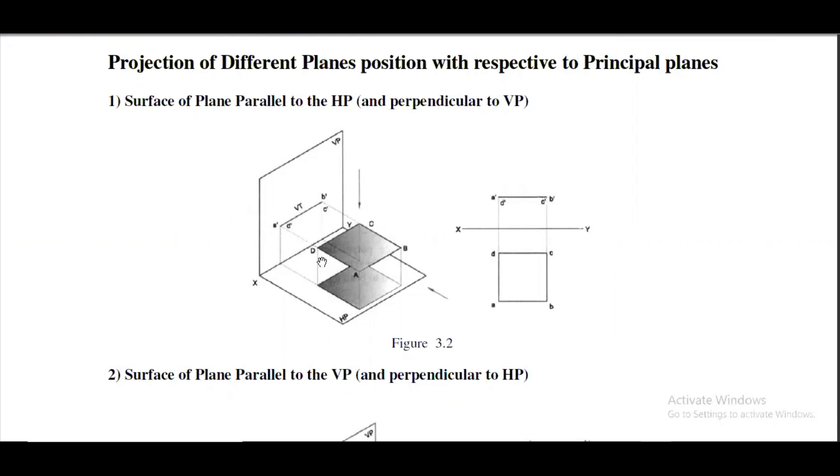Now we can see that the surface ABCD is parallel to HP and the sides AB, BC are perpendicular to VP. So when you see a surface in the top position we will be getting exact replicate of the figure. In this figure you can observe that this figure is being replicated on the HP which will be top view for the surface. When coming to the front view it will be a line because the plane or the surface is perpendicular to the VP. So we will be getting a line.